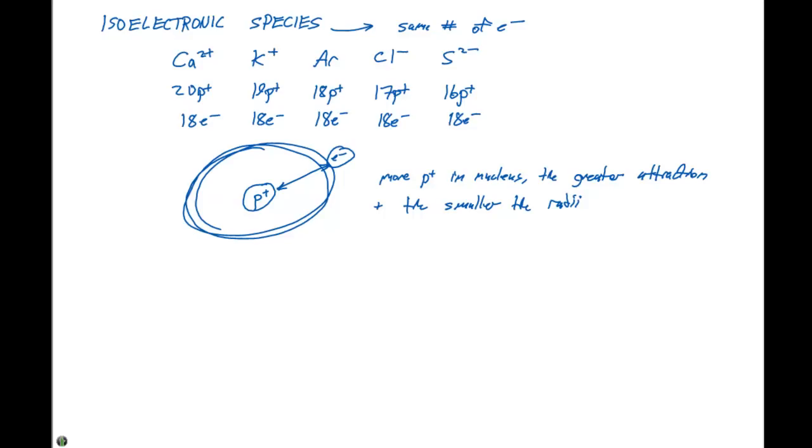So when we look at some elements arranged, we first need to figure out how many protons and how many electrons they have. If everything has the same number of electrons, we have a benchmark in which we can arrange these in a particular order.